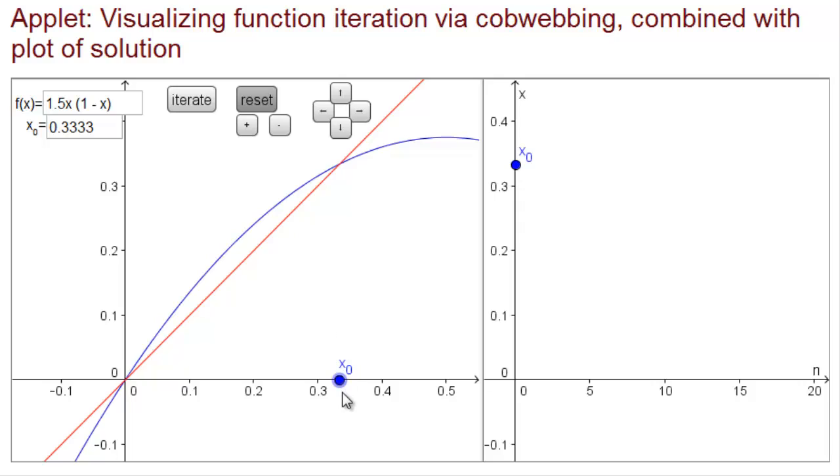But the question of stability of the equilibria is what happens if we start just above or below an equilibrium. So let's start just above one third and see what happens when we iterate the function.